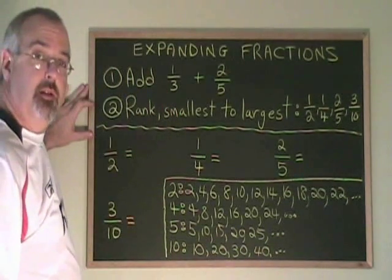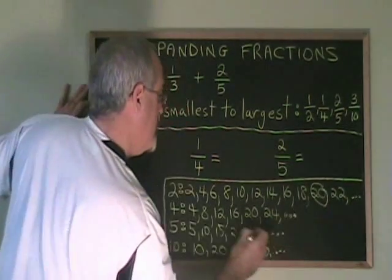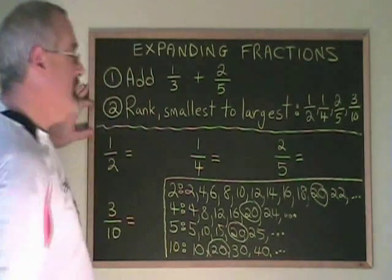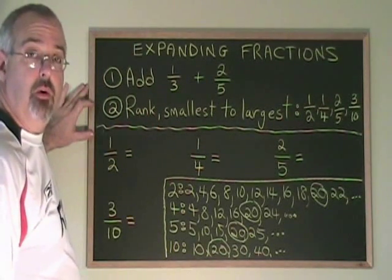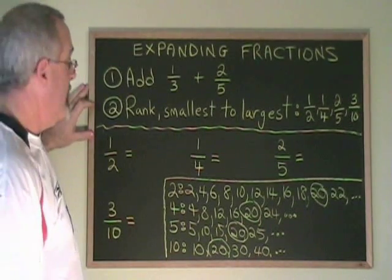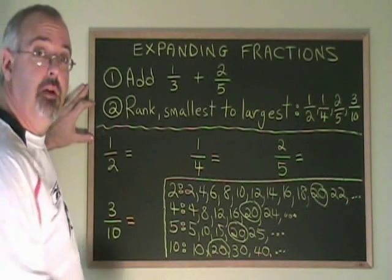The smallest number that is on all four lists is 20. So we're going to use it as our lowest common multiple and our lowest common denominator. Let's expand these four fractions over the denominator 20 so that we can answer the question.